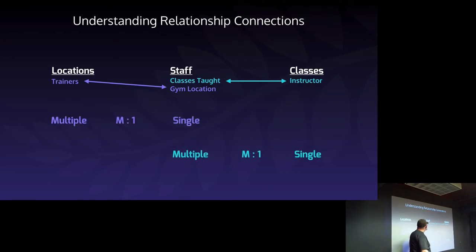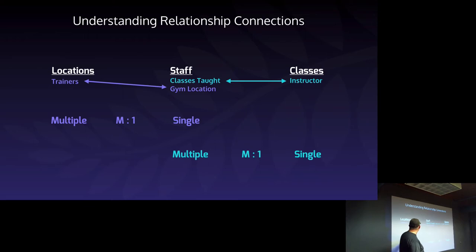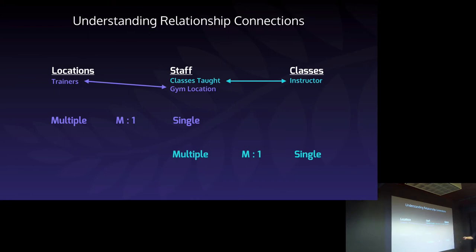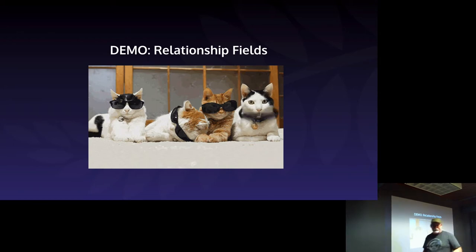In database terms: one staff at a location, multiple locations for staff. When creating a relationship field for locations, we create it as a multiple select — at this location I'm selecting multiple staff members. When entering a staff member, they can only select one location because they can only work at one. For classes, a staff member can teach multiple classes so that's a multiple relationship, but a class can only be taught by one instructor.